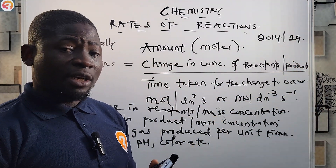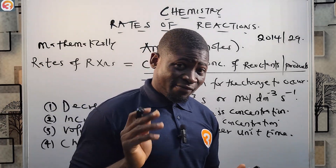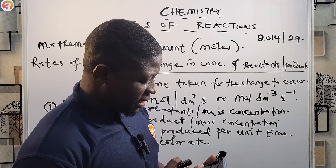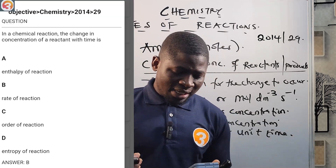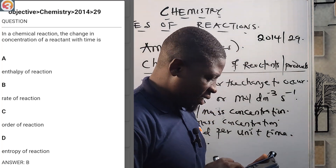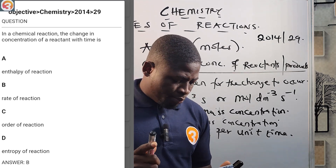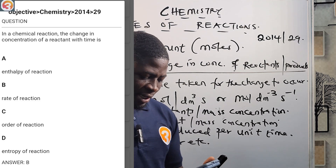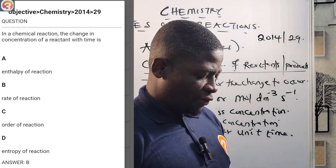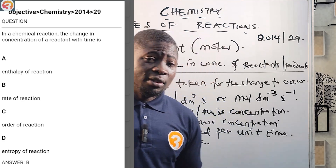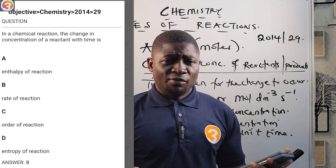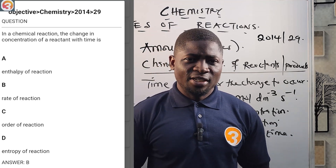2014 number 29 from the O3 School JAMB app — there are over 27,000 past questions on the app. The question says: in a chemical reaction, the change in concentration of a reactant with time is: A) enthalpy of reaction, B) rate of reaction, C) order of reaction, or D) entropy of reaction. The correct answer is B — rate of reaction. Please make sure you like, subscribe, share, and download the app right away. See you in the next episode where we talk about factors that affect the rate of chemical reaction.